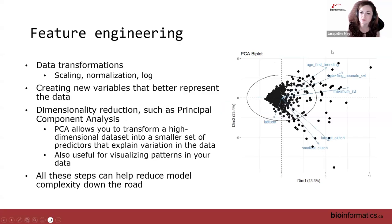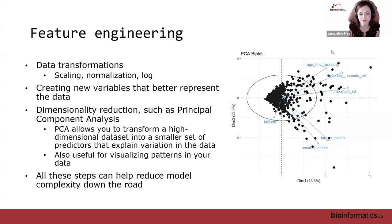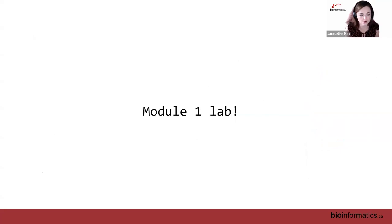Lastly, we do a little bit of feature engineering, which involves applying data transformations and creating new variables that better represent your data. You can also perform dimensionality reduction such as principal component analysis (PCA). PCA is useful because it allows you to transform a high-dimensional dataset into a smaller set of predictors that better explain the variation in your data, reducing the number of variables in your model downstream and helping visualize patterns. All of these steps help reduce model complexity so you only keep relevant features. We're going to dive right into the Module 1 lab today because we have a lot to cover.